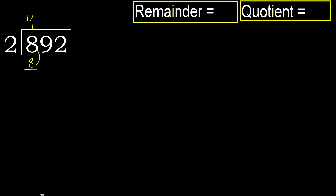Subtract 8 minus 8 equals 0. Next, bring down and eliminate the 0. Next digit: 9.